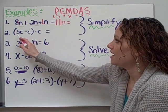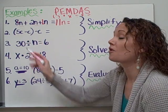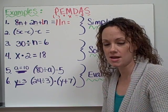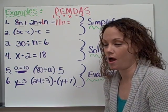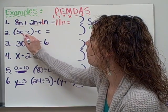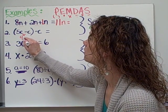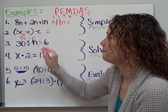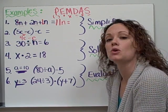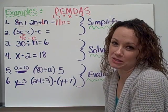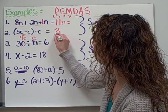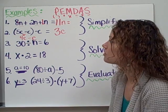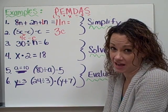So we have 5c minus c, or 5c minus 1c. 5 minus 1 equals 4. So this is worth 4c. And then we move on to the rest of the problem. 4c minus c, or 4c minus 1c. 4 minus 1 equals 3. And my final answer would be 3c. I've simplified that problem.